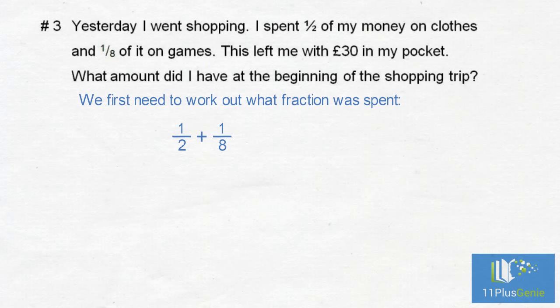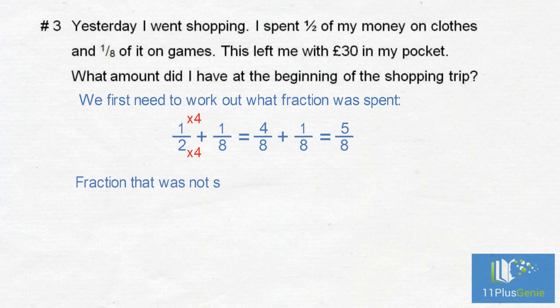The denominators of the fractions must be the same if we add them. We times the two by four to give us eight, and we times the one by four to give us four-eighths. Four-eighths add one-eighth gives us five-eighths. We now need to find the fraction that is left: one take away five-eighths equals three-eighths.